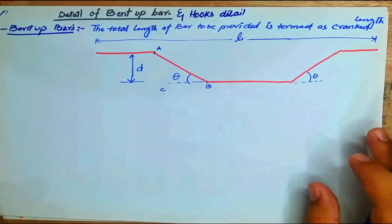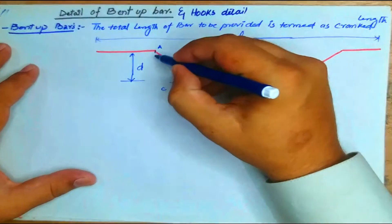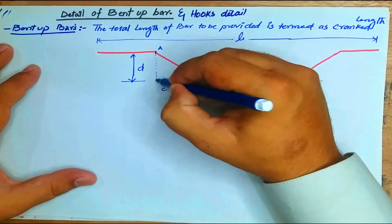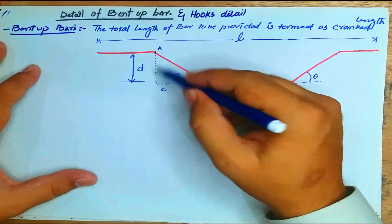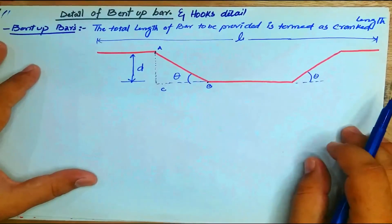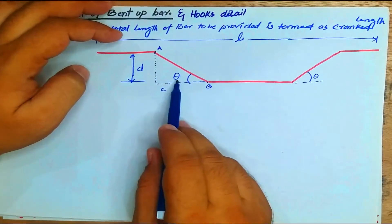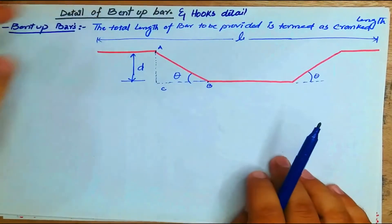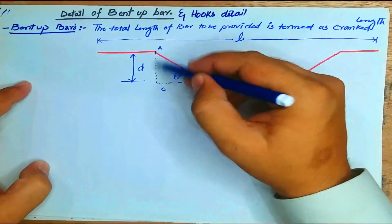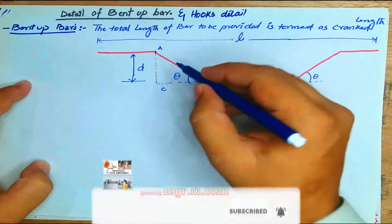To find the length of the crank, we consider that points A, B, and C form a triangle. A to C is the depth of the beam, theta is the angle, A-B is the hypotenuse, and B-C is the base of the triangle. We use this triangle to find the hypotenuse, which represents the crank length.